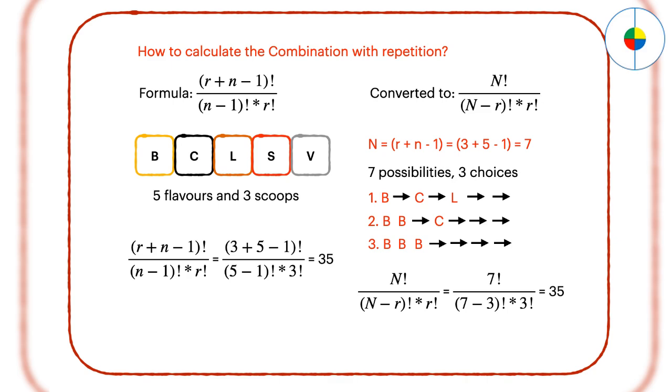How to think about this? Imagine there are 5 small boxes with the 5 flavors: banana, chocolate, lemon, strawberry, and vanilla. The 5 small boxes are ordered as B, C, L, S, and V.